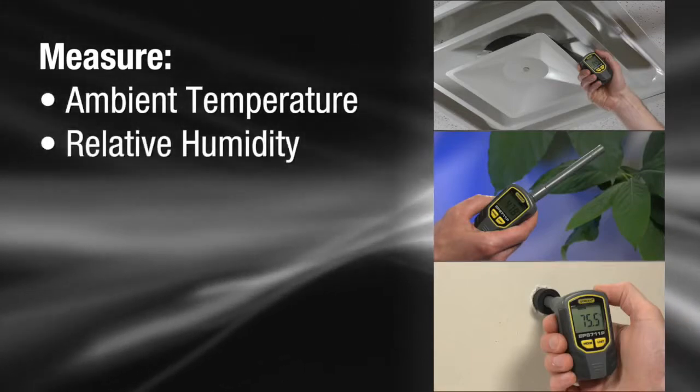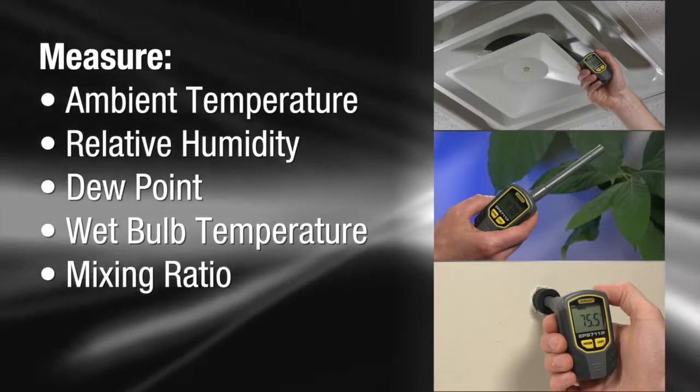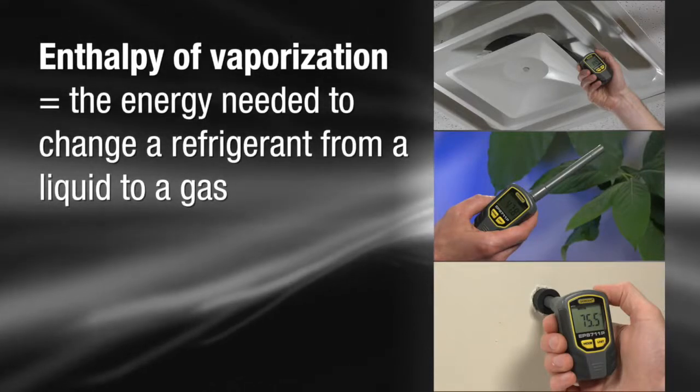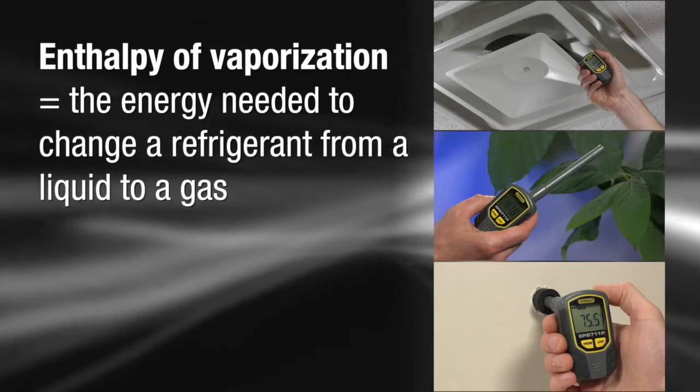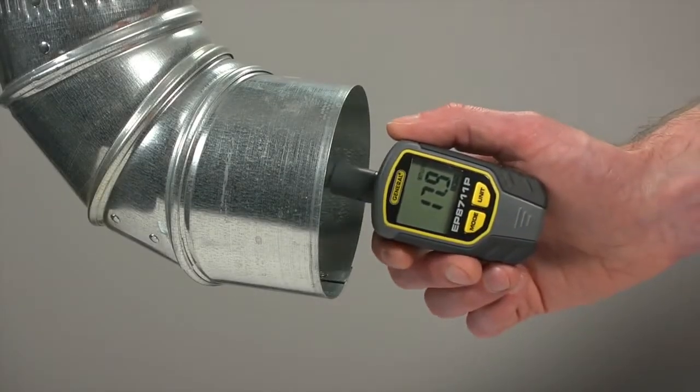Ambient temperature, relative humidity, dew point, wet bulb temperature, mixing ratio, and enthalpy of vaporization, the energy needed to change your refrigerant from a liquid to a gas. For each measurement, this psychrometer provides a broad range and high accuracy.